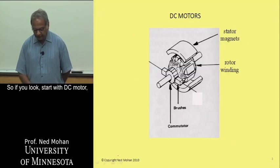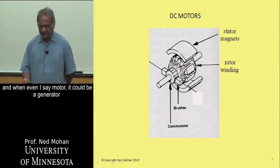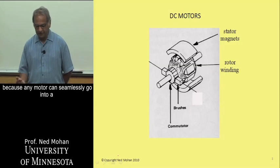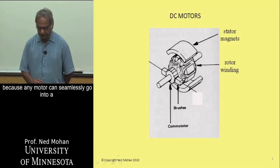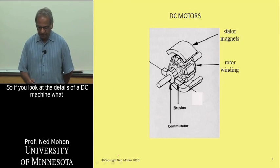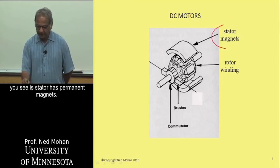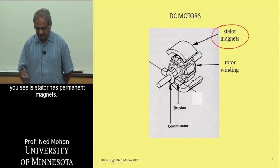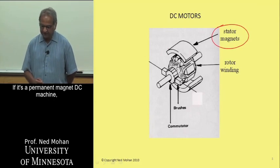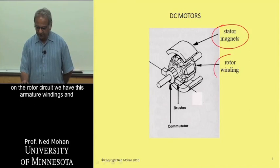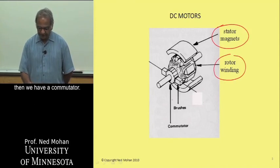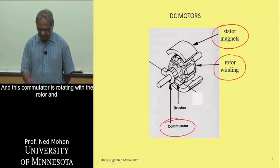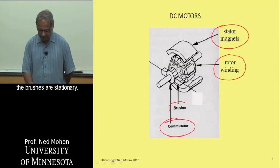So if you look, start with DC motor, and whenever it says motor, it could be a generator, because any motor can seamlessly go into a generation mode. So if you look at the details of a DC machine, what we see is the stator has permanent magnets. If it's a permanent magnet DC machine, and on the rotor circuit, we have this armature windings, and then we have a commutator, which is rotating with the rotor, and the brushes are stationary.